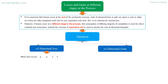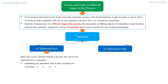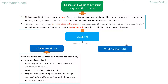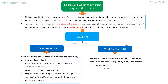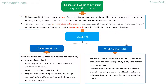Valuation of abnormal loss: when loss occurs part way through a process, the cost of any abnormal loss is calculated by establishing the equivalent units of direct material and conversion costs for the loss, calculating a cost per equivalent unit, and using these to obtain a cost for finished output and abnormal loss in the period. Valuation of abnormal gain follows the same principles, with one important difference: equivalent units of abnormal gain are given a negative value and subtracted from the total equivalent units of output in the period.